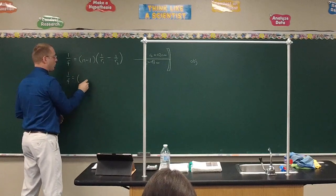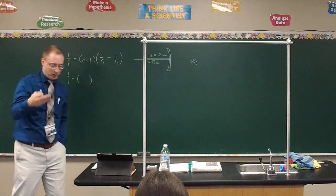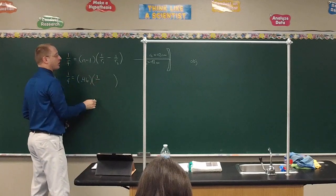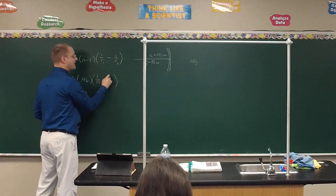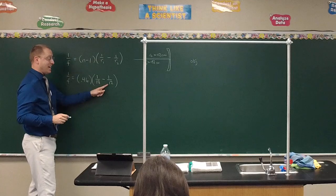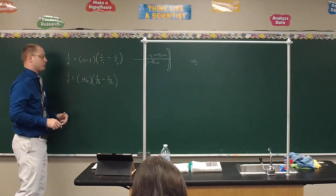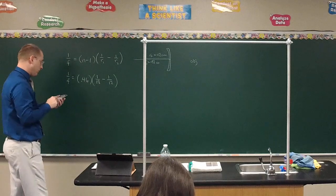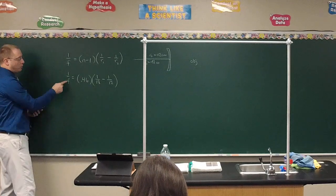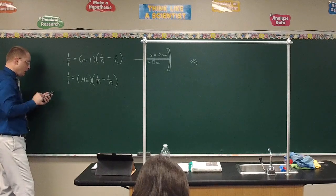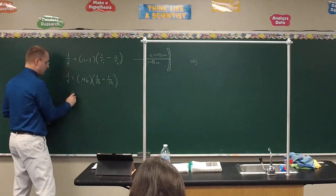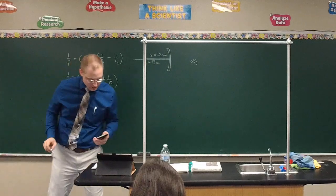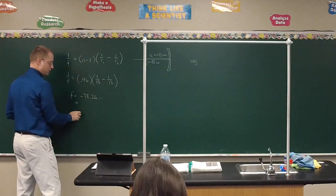For the lens maker equation: one over f equals n minus one times the quantity one over R1 minus one over R2. The refractive index is 1.46, so n minus one equals 0.46. We plug in one over 18 minus one over 12, then multiply by 0.46, and take the reciprocal at the end. We get a focal length of approximately negative 78 centimeters.